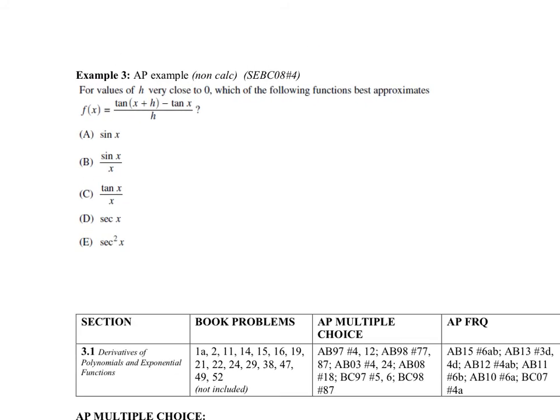So here's example three. We do have the definition of a derivative. You will all be experts on that. So it says for all values of H very close to zero. Well, that just means the limit as H goes to zero of tangent of X plus H minus tangent of X divided by H is equal to what?